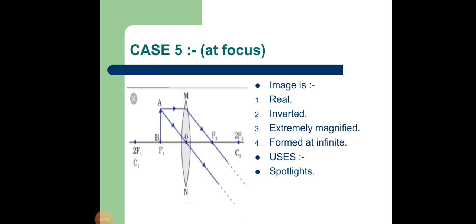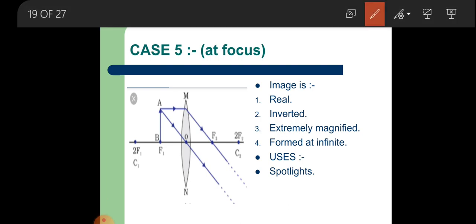Condition five: object placed at the focus. One ray comes parallel to the principal axis and passes through the focus; the other goes through the optical center. One interesting thing: both refracted rays are now parallel. Parallel rays do not meet, or are assumed to meet at infinity. So the image will be extremely large, formed at infinity. Properties: real, inverted, extremely magnified, formed at infinity.